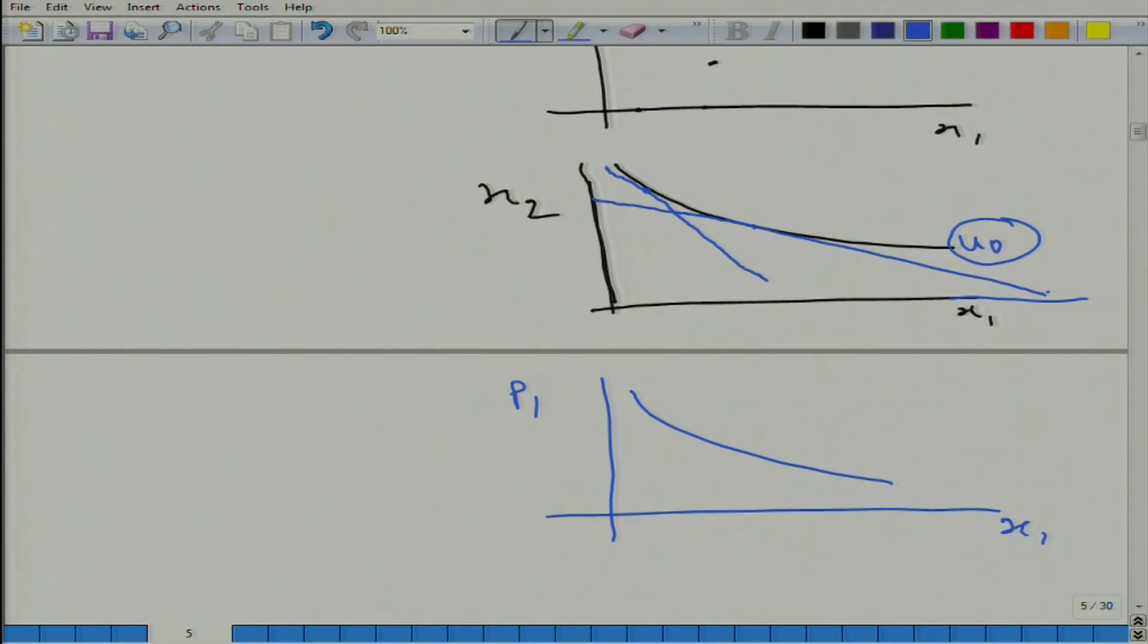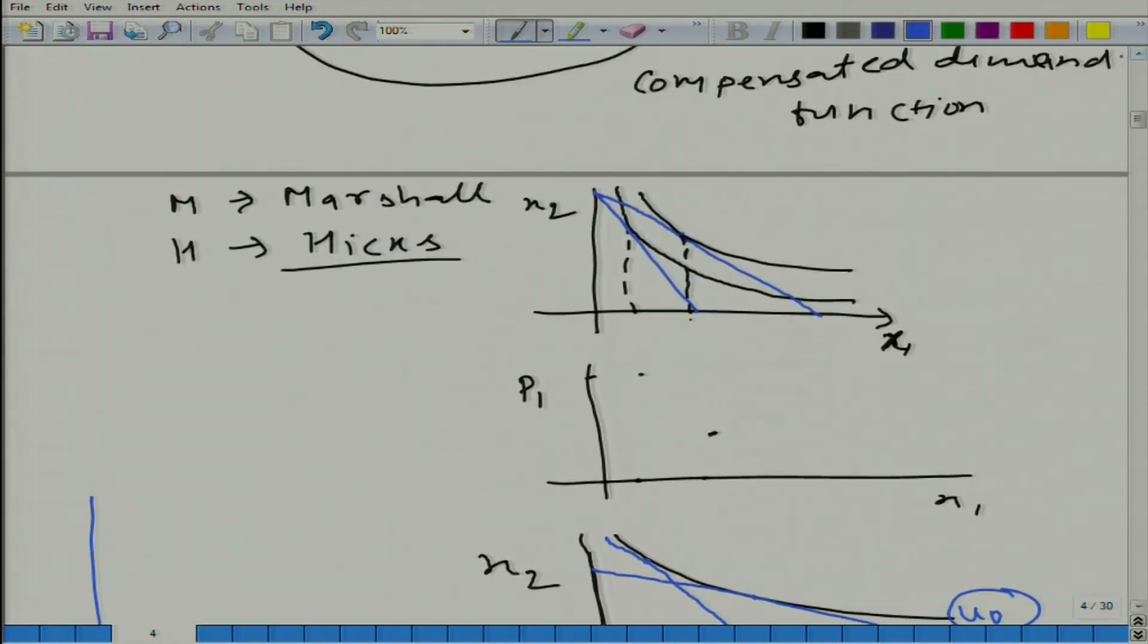Now, why do we call it compensated? Remember, when we talked about substitution effect - this is the total effect. Now, how can we get the substitution effect? We draw a line parallel to the new budget line, such that it is tangent to the original indifference curve. So, we get something like this and that is what we are doing.